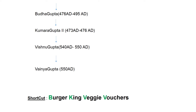After Purugupta, Buddha Gupta ruled between 476 AD and 495 AD. After him, Kumar Gupta II ruled between 473 AD and 476 AD. Then Vishnu Gupta ruled between 540 AD and 550 AD, followed by Vainya Gupta. The shortcut to remember these last four rulers is 'Burger King Veggie Watchers.'